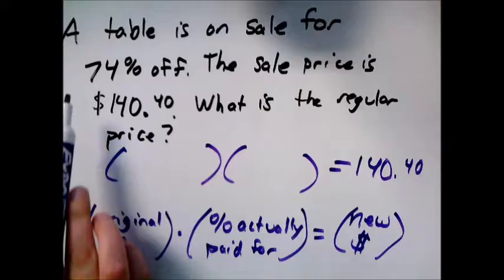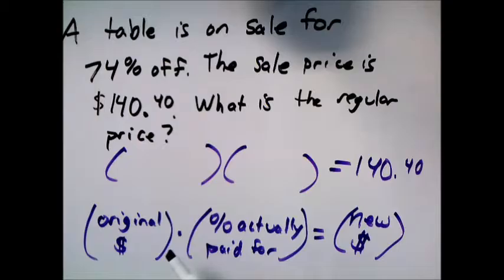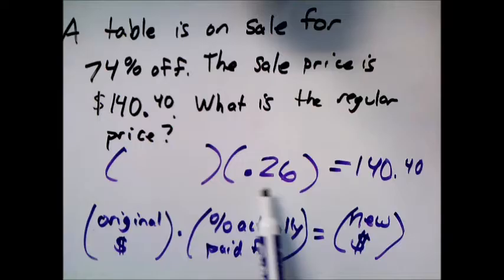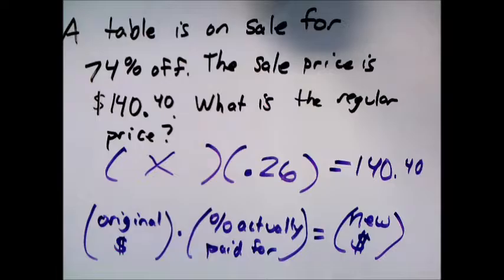And now if we're thinking about the percent you actually paid, if something was 74% off, so you don't have to pay, you're not paying for 74%, it's 74% off. Instead of paying for 100% of what it used to cost, you only have to pay for 26% of it. Right, 26 and 74 adds up to 100. So if something's 74% off, you really only pay 26% of what it used to cost.